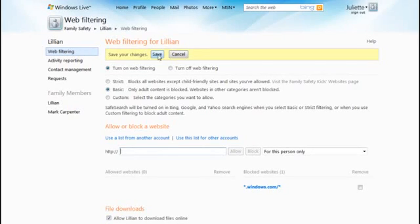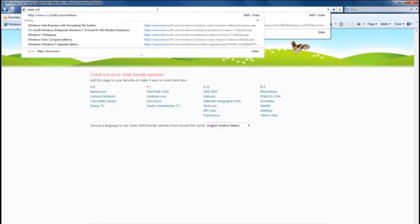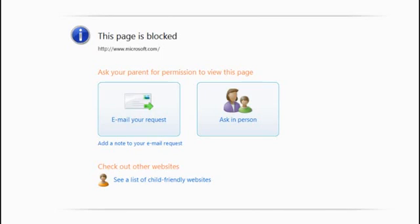Now let's see what happens when Lillian tries to go to a website I've blocked. Lillian logs onto Windows, then she opens Internet Explorer and goes to the Microsoft website. The site is blocked, but Lillian can ask for permission to go there, and then I can decide whether or not to let her.